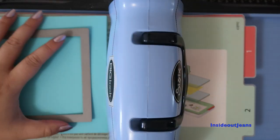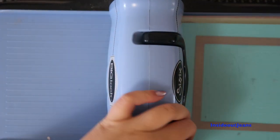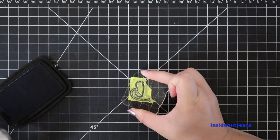For this card, I'm using Lawn Fawn stitch frames, so I die cut this out using blue paper to look like the ocean.